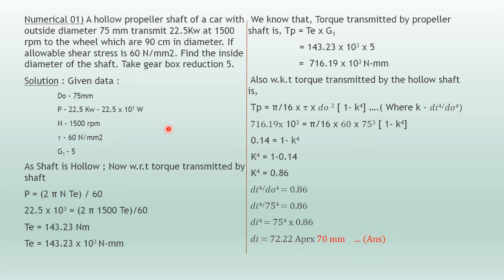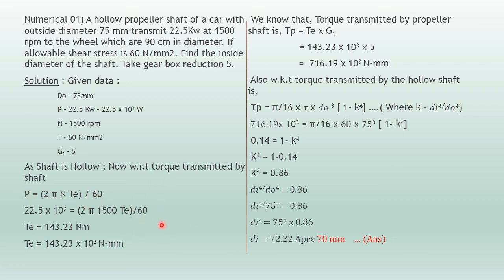Let's reverse through this numerical for a clearer idea. We need to find the inside diameter. K is the ratio of inside to outside diameter — we have the outside diameter but not the inside, so we must solve for Tp first. But we don't have Tp, so we compute Tp = Te × G1. We don't have Te either, so we first find Te using P = 2πNTe/60, giving Te = 143.23 N·m. That is the approach to solve this numerical.